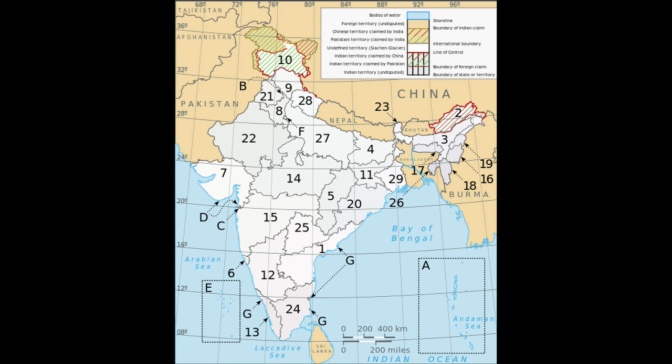The President of India is the supreme commander of the nation's armed forces. With 1.395 million active troops, they compose the world's second largest military. It comprises the Indian Army, the Indian Navy, the Indian Air Force, and the Indian Coast Guard. The official Indian defense budget for 2011 was 36.03 billion US dollars, or 1.83% of GDP. For the fiscal year spanning 2012 to 2013, 40.44 billion US dollars was budgeted. According to a 2008 SIPRI report, India's annual military expenditure in terms of purchasing power stood at 72.7 billion US dollars. In 2011, the annual defense budget increased by 11.6%. As of 2012, India is the world's largest arms importer, accounting for 10% of funds spent on international arms purchases between 2007 and 2011. Much of the military expenditure was focused on defense against Pakistan and countering growing Chinese influence in the Indian Ocean.